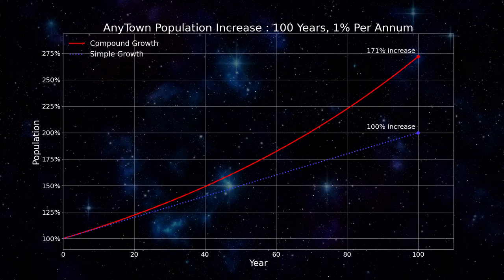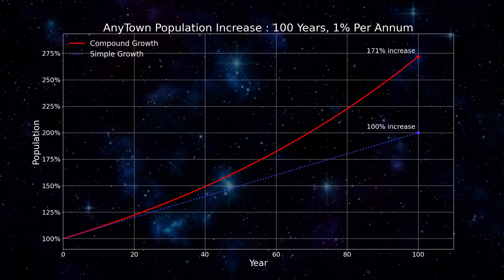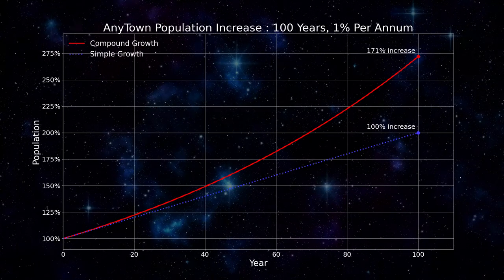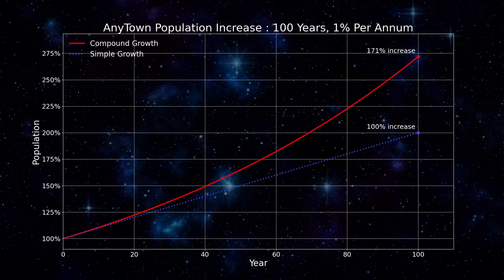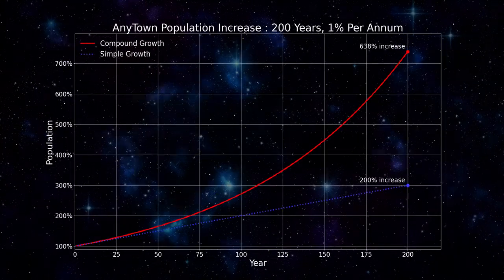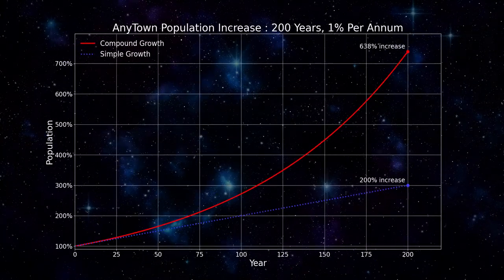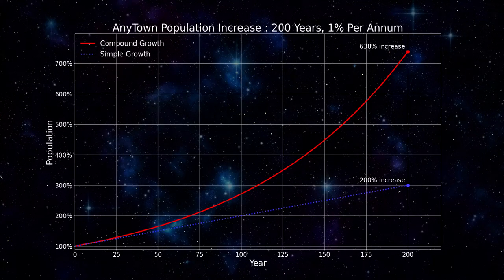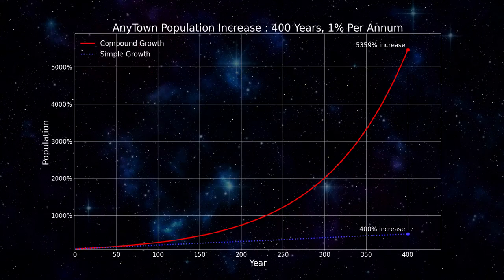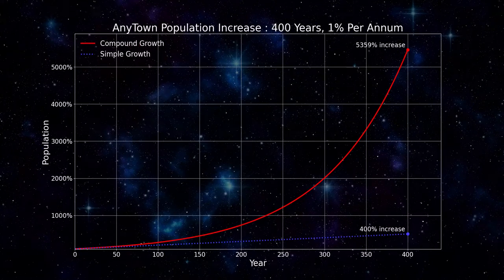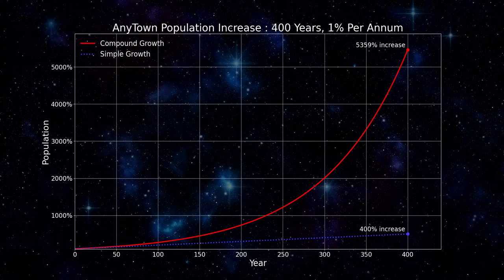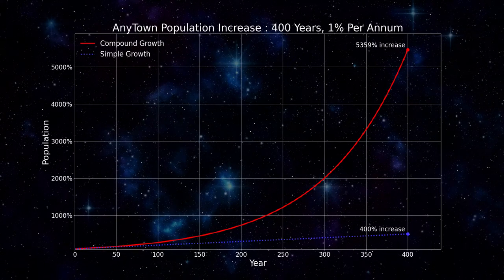In this population problem, because of compound growth, the town's population doubles in only 70 years, and in 100 years it will have increased by 171% over its original size. In 200 years, the population increases to over 600% of its original size. In 400 years, it increases over 5,000%. All these outcomes result from a modest 1% annual population increase.